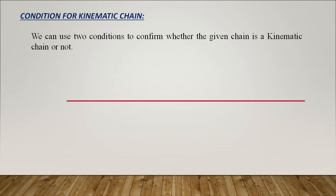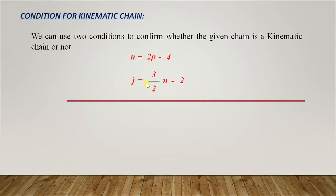The two formulas are: n = 2p - 4, and j = (3/2)(n - 2). These are the two basic formulas used to confirm whether a given chain is a kinematic chain or not. In these formulas, n is the number of links, p is the number of pairs, and j is the number of joints.